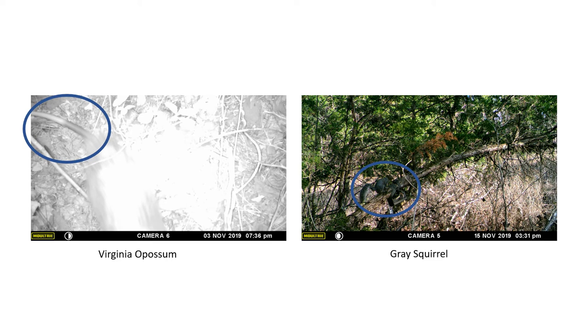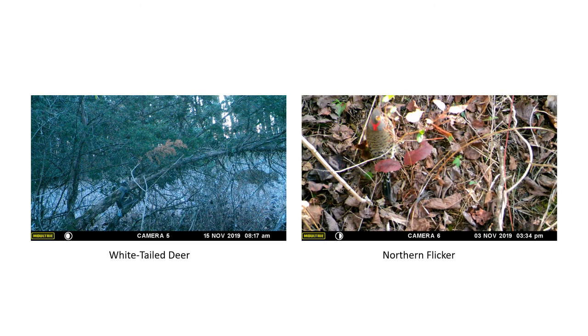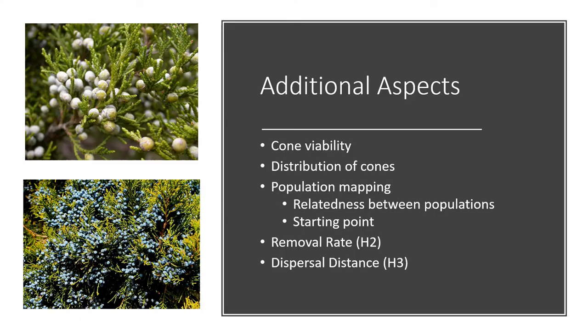These are some of my favorite photos — a white-tailed deer just passing by, and a northern flicker, which is a ground-foraging bird looking for things to eat. This is one of my absolute favorite videos, taken on November 24th at one of our field sites on a ground camera. Based on the ear shape and tail shape, we were able to identify this animal as a gray fox.